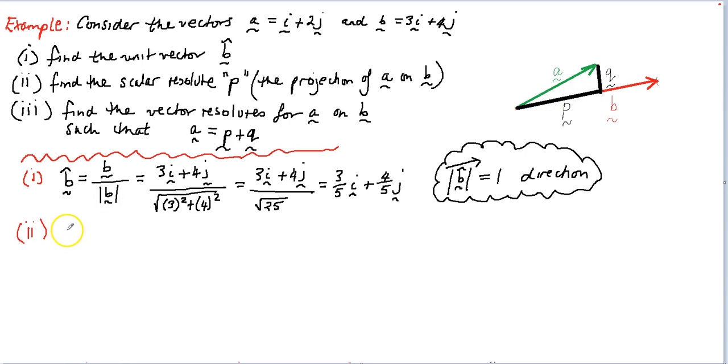So if we let the scalar resolute is equal to P, so that means to work it out, P is going to be equal to the dot product of A and the unit vector in the direction of B. So if you remember how to work that out, that's just simply I plus 2J, which is the vector A.